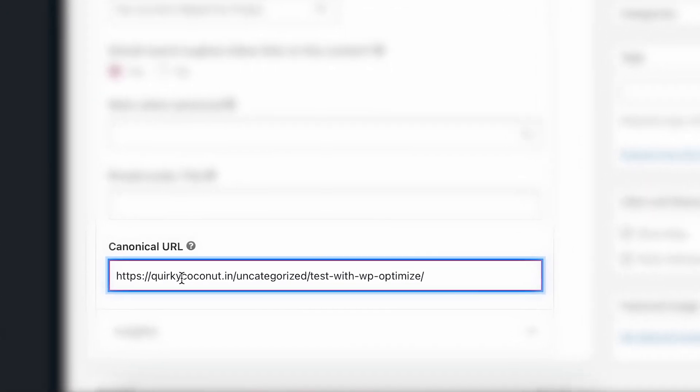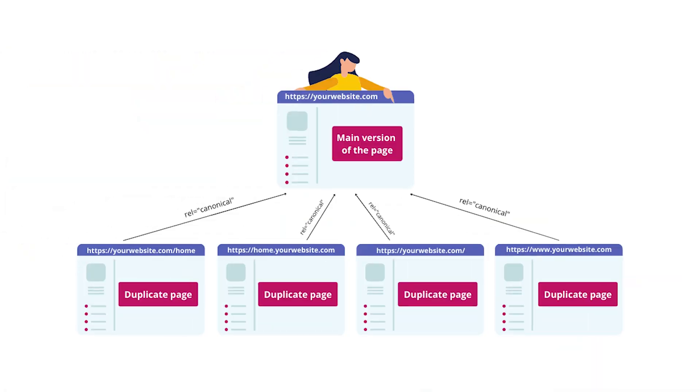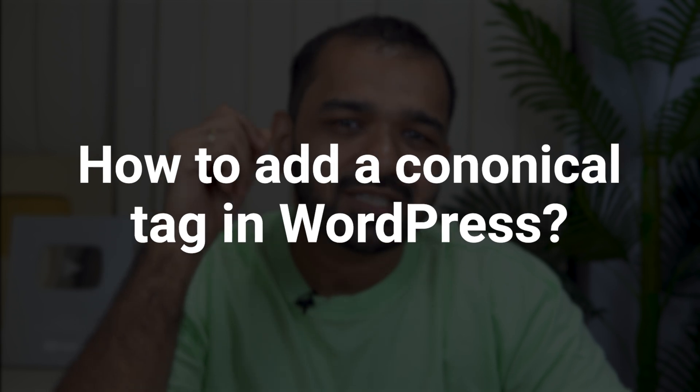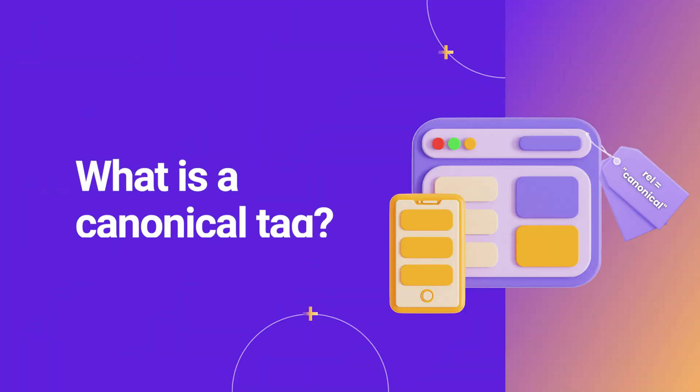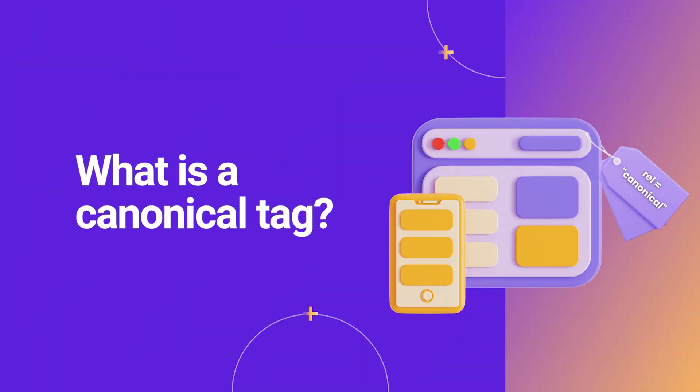Canonical tags are super important — they help prevent duplicate content issues and consolidate SEO ranking signals. If you're looking to add a canonical tag in WordPress, today I'm going to show you just how to do that in this tutorial. So, what is a canonical tag?